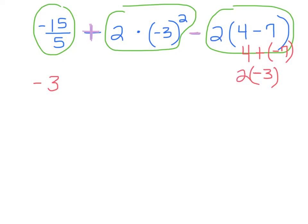Well, 2 times negative 3. I know 2 times 3 is 6, and they're different signs so it's negative. So so far I have this negative 3 and I have this negative 6. I'm going to come down to the bottom and rewrite it.